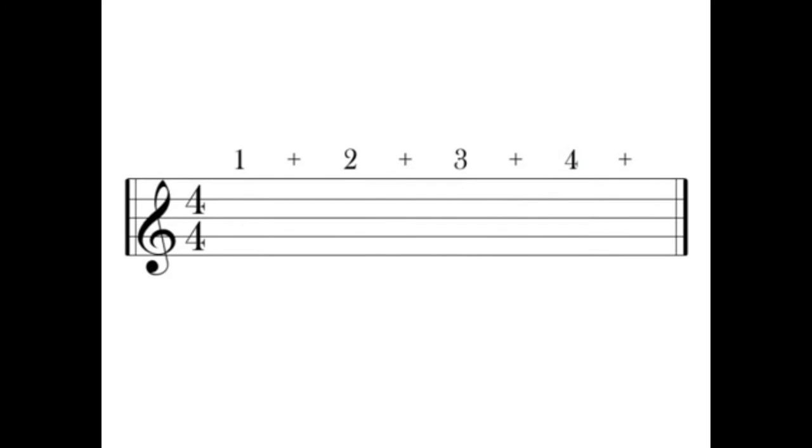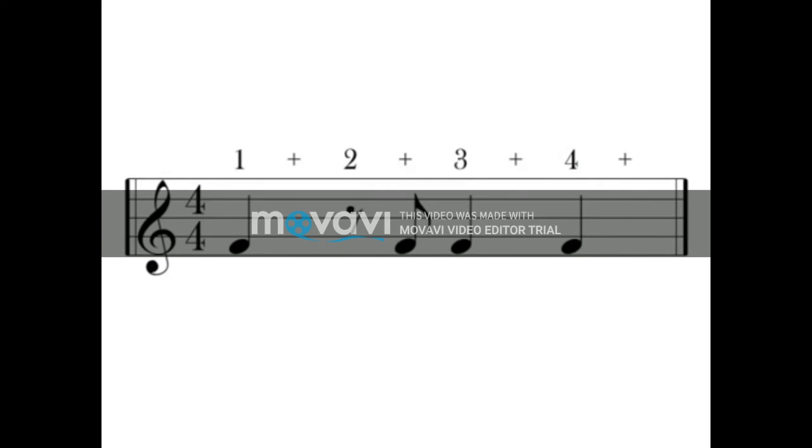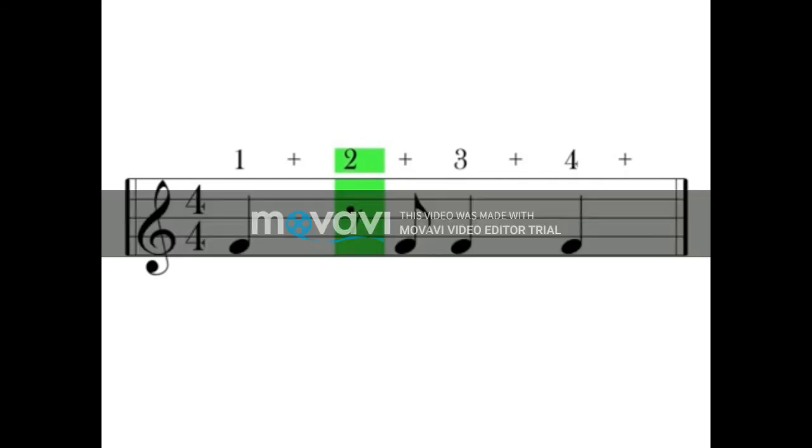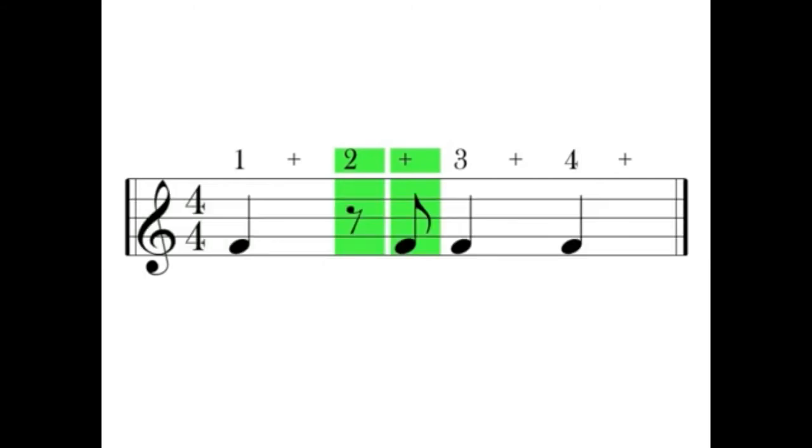Now in the second measure, the eighth rest and the eighth note are switched. On beat two, the downbeat contains an eighth rest and the upbeat contains an eighth note. With this, you remain silent for the first half of the beat and come back in with the word AND on the upbeat. One and, three and, four.